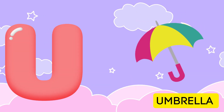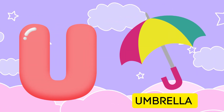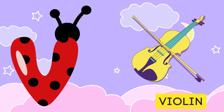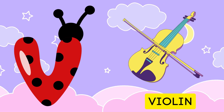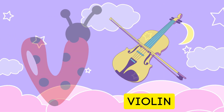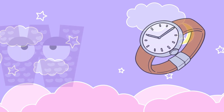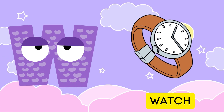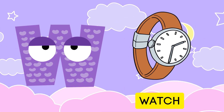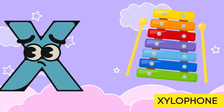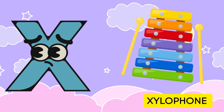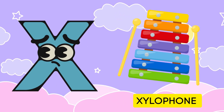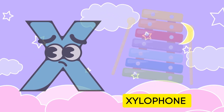U is for umbrella, u-u-umbrella. V is for violin, v-v-violin. W is for watch, w-w-watch. X is for xylophone, x-x-xylophone.